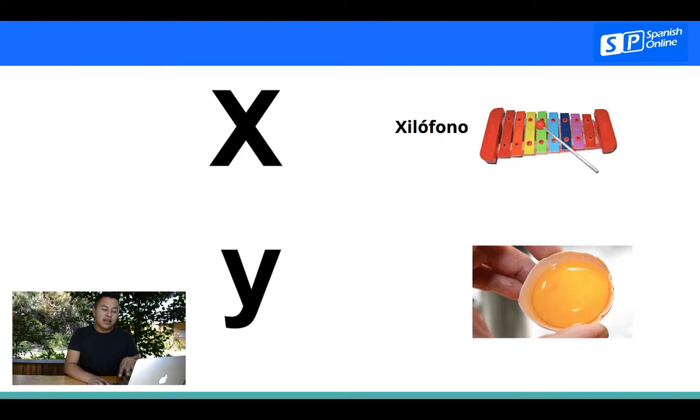Continuamos con la S de sapo. In this case, in Spanish, we have two names to the Y in English. We say Y and Y, so you can use, what do you prefer? So, Y or Y. Like in this case, Yema.